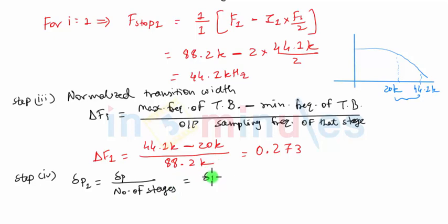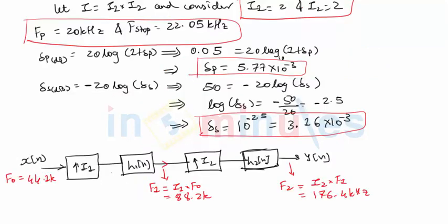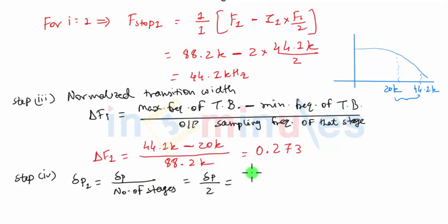Here it will be delta P upon number of stages is two and delta P is something that we had calculated from the previous value. So that was nothing but delta P was 5.77 into 10 raised to minus 3. So 5.77 into 10 raised to minus 3 divided by 2 will be 2.85 into 10 raised to minus 3.